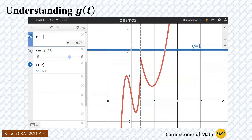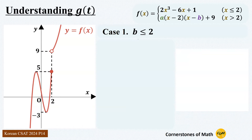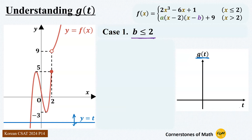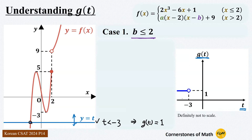As the value of t changes, the number of intersection points also changes, so we need to consider each case. Let us start with the case where b is less than or equal to 2, so the parabola only contains the increasing part. We move the line y equals t up and down and construct a g(t) versus t plot. When t is very low — less than minus 3 — there is only one intersection, so g(t) equals 1.